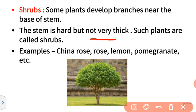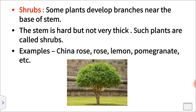Sometimes the stem is hard. Such plants are called shrubs. Examples of shrubs are China Rose, Rose, Lemon, and Pomegranate. Their height is almost the same as a human being's height.